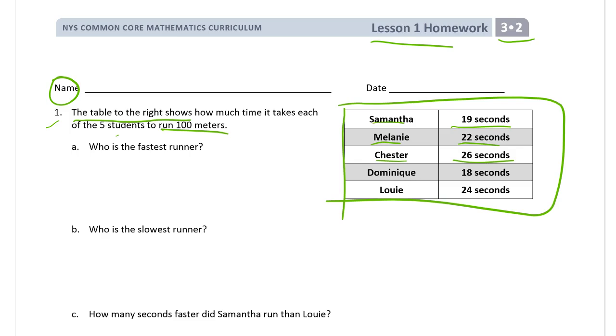Keep in mind that this is backwards. Who's the fastest runner? They're all running 100 meters, so whoever is the fastest runner is going to be the one in the fewest number of seconds. Whoever does it faster, they're finishing first, so it takes them less time.